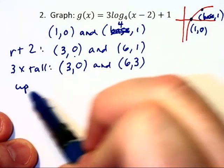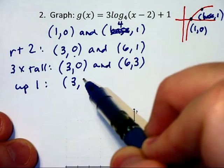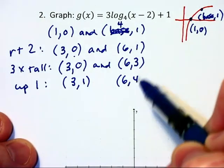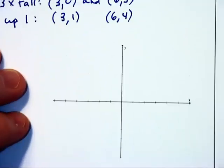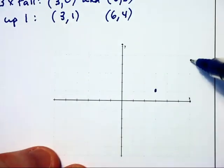The plus 1 at the end tells us we're moving our graph up one unit. So it moves these two key points to (3,1) and (6,4). Let's plot (3,1) and (6,4).